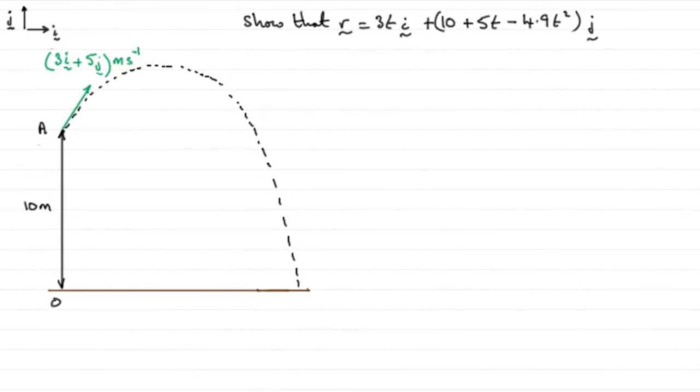Now for the first part of this question, what I've done is I've copied out a sketch of what we're given, and we've got to show that the position vector of this particle at any point T on this trajectory is given by this equation here.